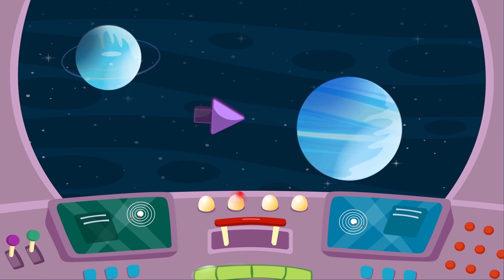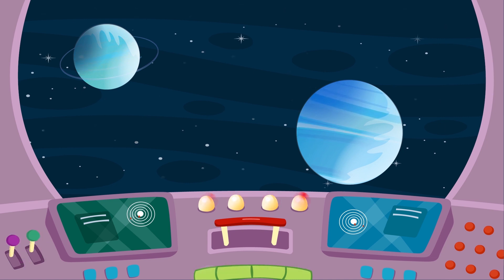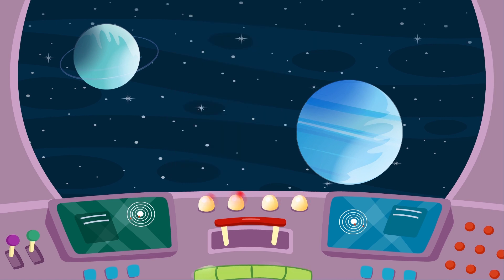Neptune is the eighth and most distant planet in our solar system. It is an ice giant planet and about four times wider than Earth. Neptune takes about 16 hours to rotate once and about 165 Earth years to orbit the Sun.